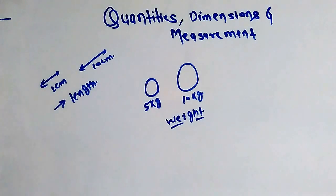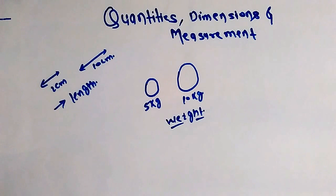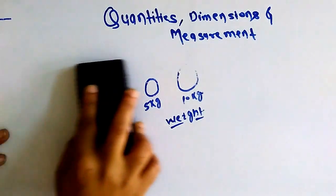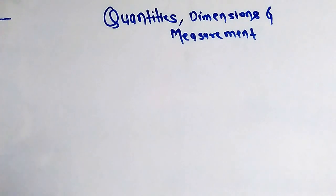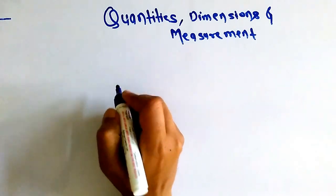We have seen that there are a number of objects in nature, all having some characteristics. Those characteristics which can be measured are termed as physical quantity. Whatever quantity we see in nature, if we can measure it, it is known as a physical quantity. It should also follow some physical laws — that is, the laws of physics, such as Newton's laws and heat laws.